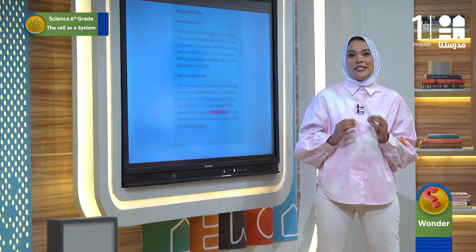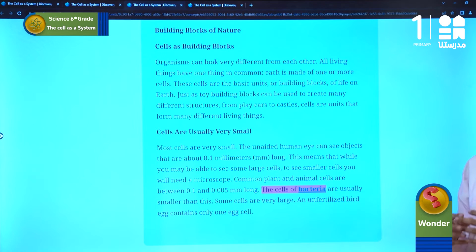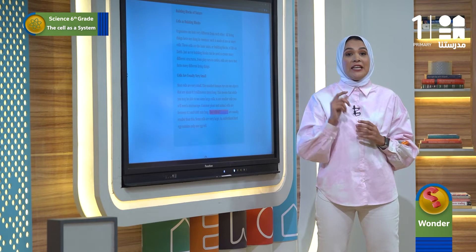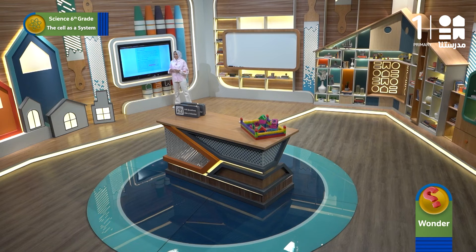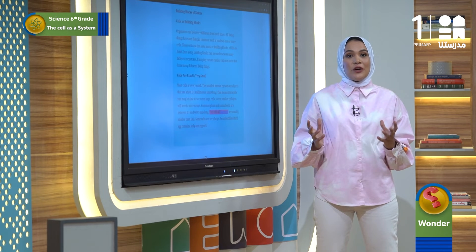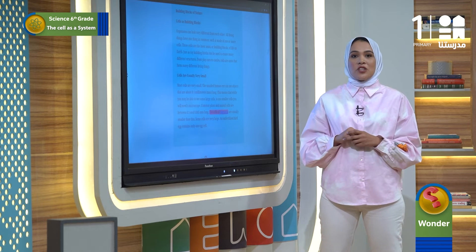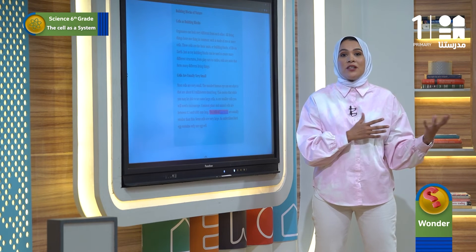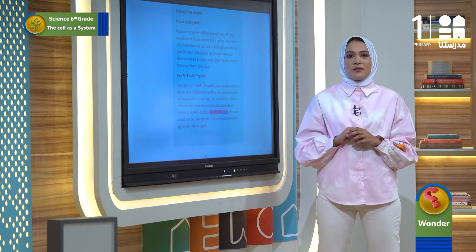That was a very nice and simple text. I will share my thoughts with you. Organisms can look very different from each other, but they have one thing in common — each is made of one or more cells. These cells are the basic units, or building blocks, of living organisms. Just as toy building blocks can be used to create many different structures, from play cars to castles, cells are units that form all different living things.